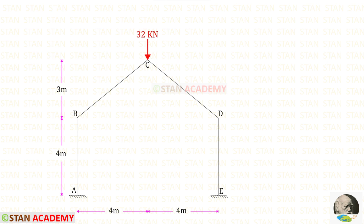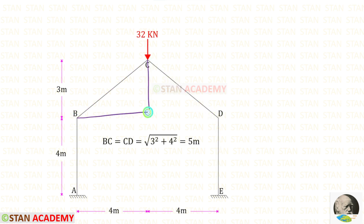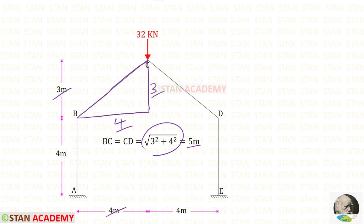This is a symmetrical frame. In the vertical members AB and DE, and in the inclined members BC and CD, there is no load. At joint C, we have a nodal point load of 32 kilo Newtons. The height of AB and DE is given as 4 meters. We need to find the inclined length of BC and CD. Applying Pythagoras' theorem: the base of the triangle is 4 and the height is 3, so the root of 3 squared plus 4 squared gives us 5 meters — that is the inclined length of BC and CD.